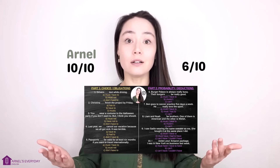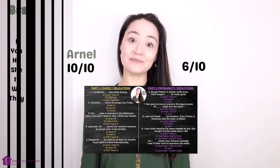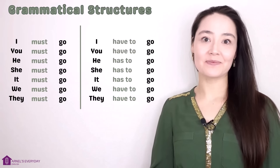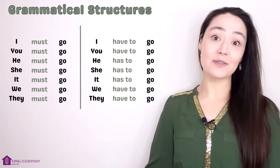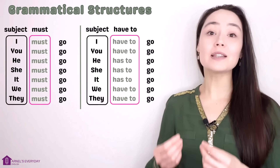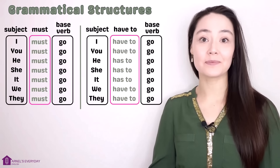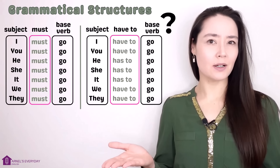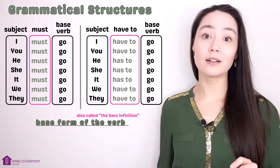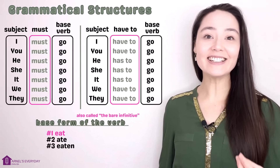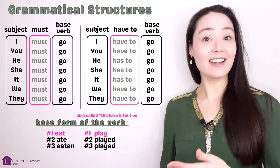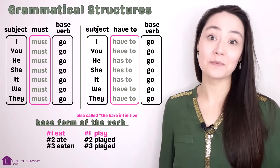My name's Arnelle. Let's start. First things first, the grammatical structures. You can see: subject, must, have to, plus base verb. What's the base verb? The base form of the verb is verb number one. Eat, ate, eaten. Play, played, played. Eat and play are the base form of the verb.